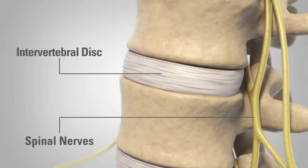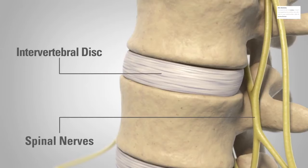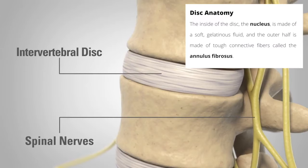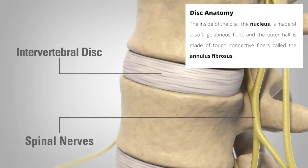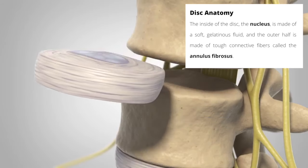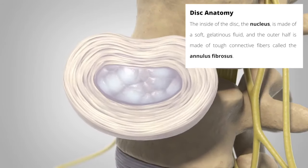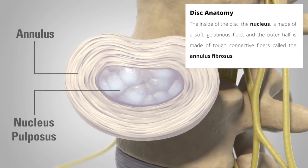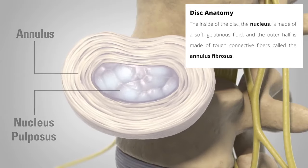I'm going to explain the disc anatomy for you. The inside of the disc, the nucleus, is made of a soft gelatinous fluid, and the outer half is made of tough connective fibers called the annulus fibrosis.